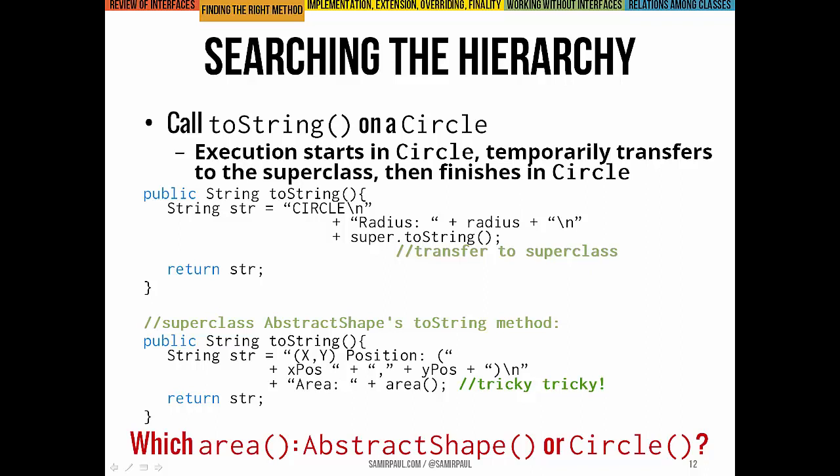Here's a quirky thing that happens in abstract Shape's toString method: it calls the area method. The question is, which version of area will be called? Will it call abstract Shape's version because we're inside abstract Shape's toString? Or will it call the Circle object's version because we're using a Circle object? The answer makes sense: the actual object is a Circle, so even inside the abstract Shape's toString, we'll use the Circle object's version of area. This is strange, but it's very commonly tested on the AP exam.